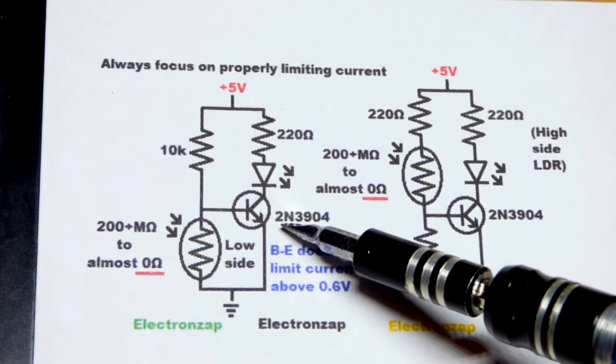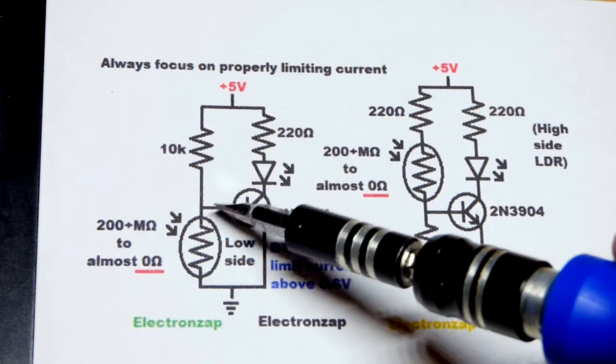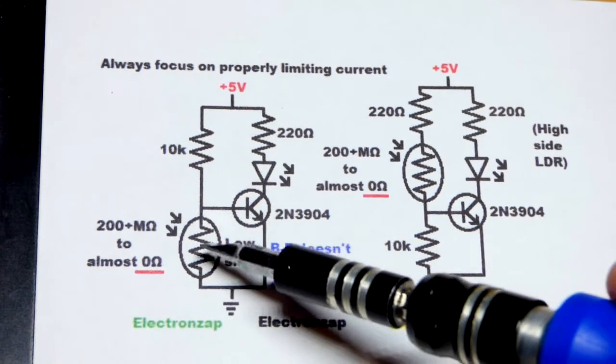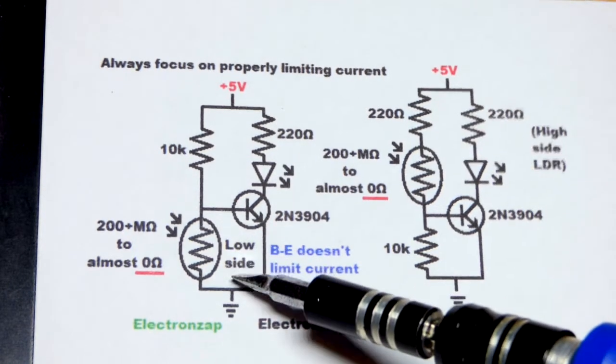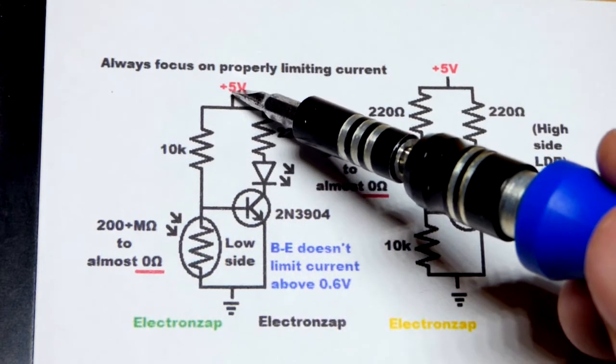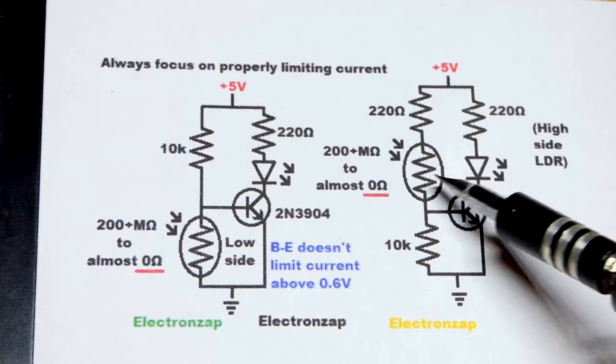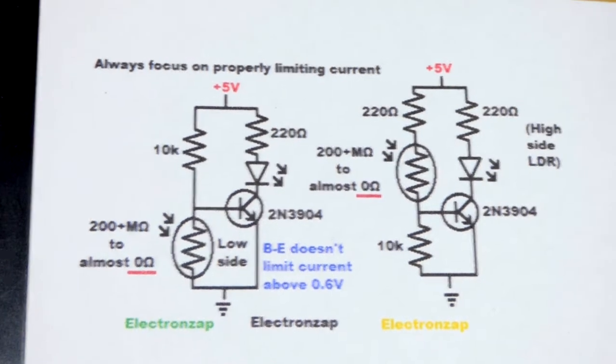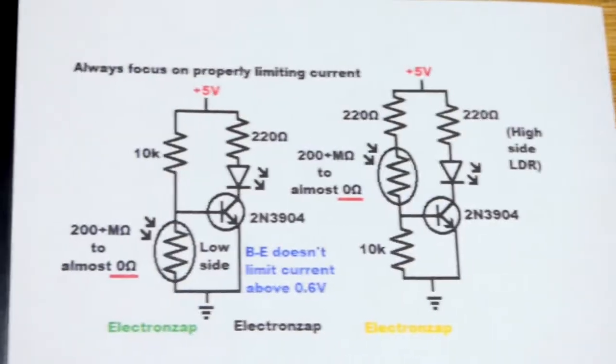Here we have an NPN bipolar junction transistor being controlled by a light-dependent resistor voltage divider with the light-dependent resistor voltage divider on the low side. You consider ground to be a lower voltage and the positive supply a higher voltage. And you can also put the light-dependent resistor on the higher side. So I just wrote a little note over there, high side light-dependent resistor.